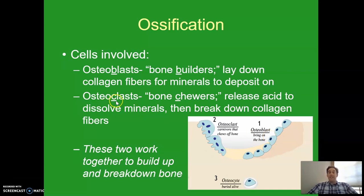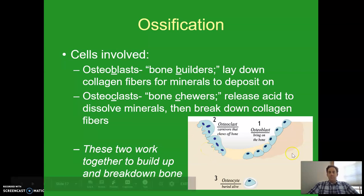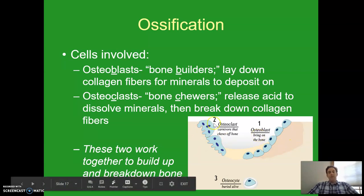Osteoclasts — think 'clasts' because these are the bone chewers. Their job is to break bone down. They release an acid that dissolves the minerals away, and then they slowly break those collagen fibers down. So the osteoblasts build the bone up, and the osteoclasts chew it down.